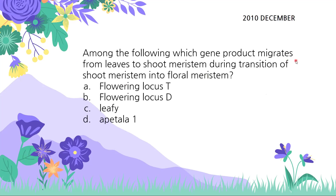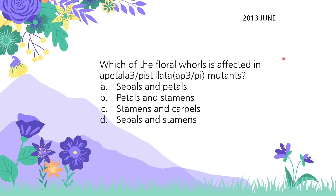Among the following, which gene product migrates from leaves to shoot meristem during the transition? From the previous video, we had the photoperiodic pathway dependent on the Constans gene, which activates the FT gene. The FT gene is the one that migrates to the nucleus, then binds to FD, and activates Leafy. So the answer is FT — option A.